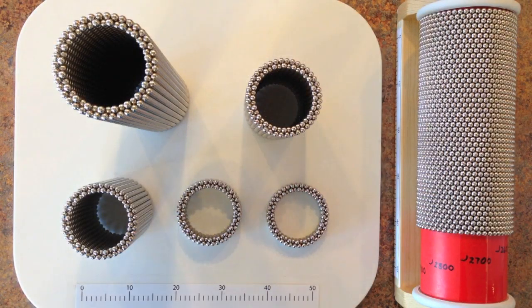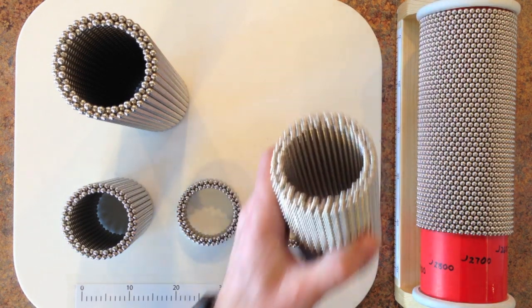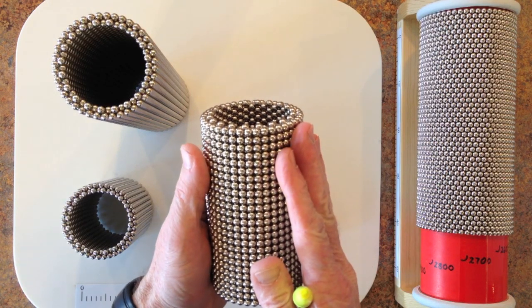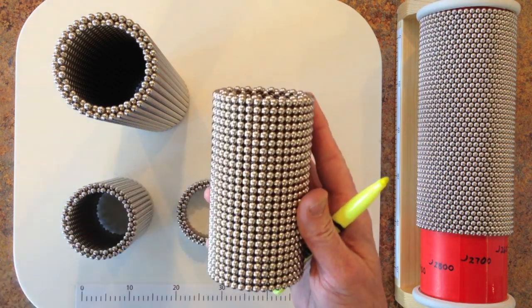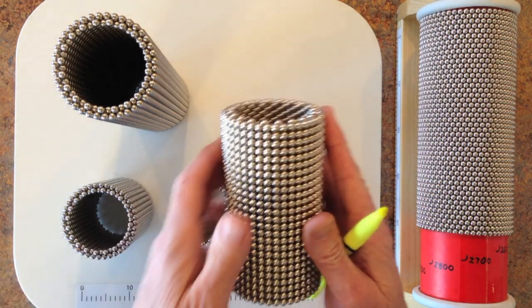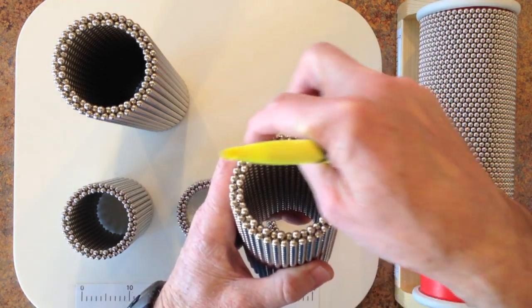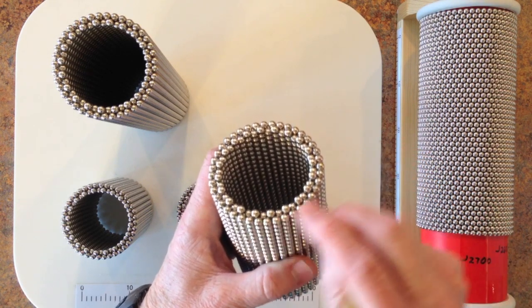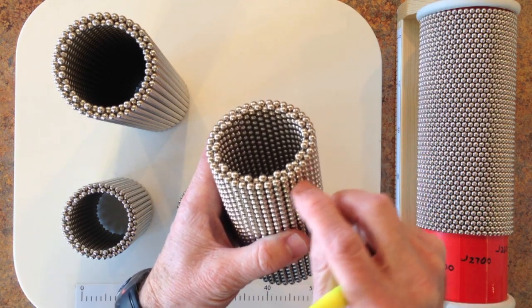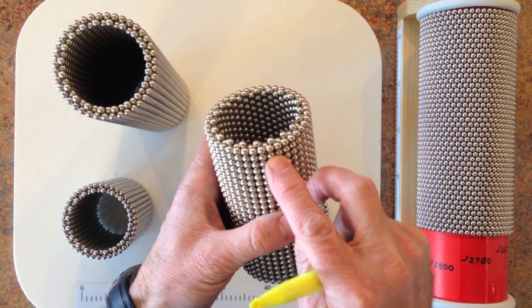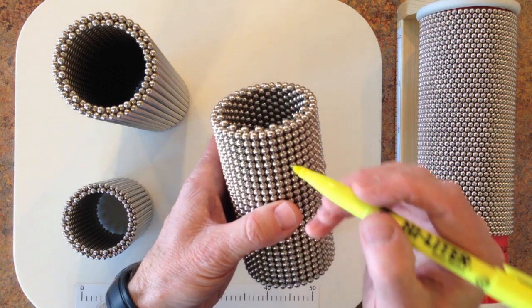The double-walled tube has a fascinating geometry. The outer wall consists of rings of 40 magnets stacked directly on top of each other. So this ring around the outside has 40 magnets. That'd be ring 1, ring 2, ring 3 and they're stacked directly on top of each other making 40 vertical columns.